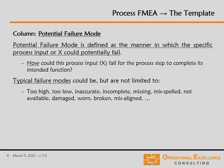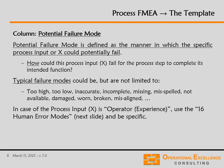Or if the input is a person who does the work in that process step and the attribute is the availability of that person, then the failure mode would be that the person is not available. Or if the input is an oven and the X is the temperature, then a failure mode would be that the temperature could be too high or too low. The failure mode is always that the X is not what it needs to be for our process to deliver the desired results.